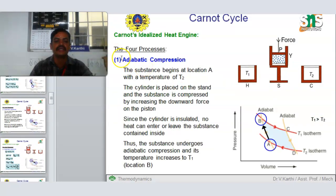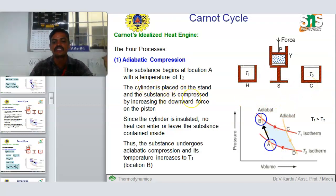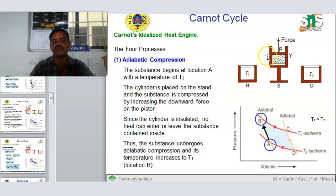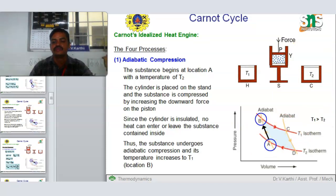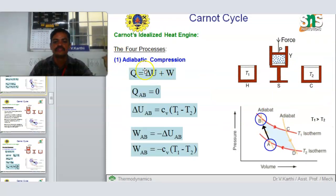The first process is adiabatic compression. The substance begins at location A with temperature T2. The cylinder is placed on the stand and the substance is compressed with an increasing downward force on the piston. Since the cylinder is insulated, no heat can enter or leave the substance contained inside. Thus the substance undergoes adiabatic compression and its temperature increases to T1, at location B.